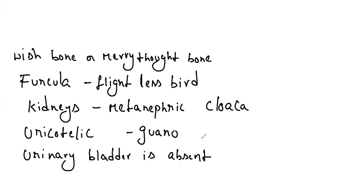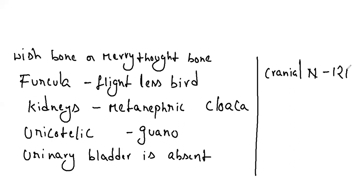The brain is large, smooth, and highly developed. The cerebellum is well-developed for aerial mode of flight. There are 12 pairs of cranial nerves — even mammals and reptiles have 12 pairs, but amphibians have 10 pairs. The skin around the nostrils is sensory in birds, called cere.